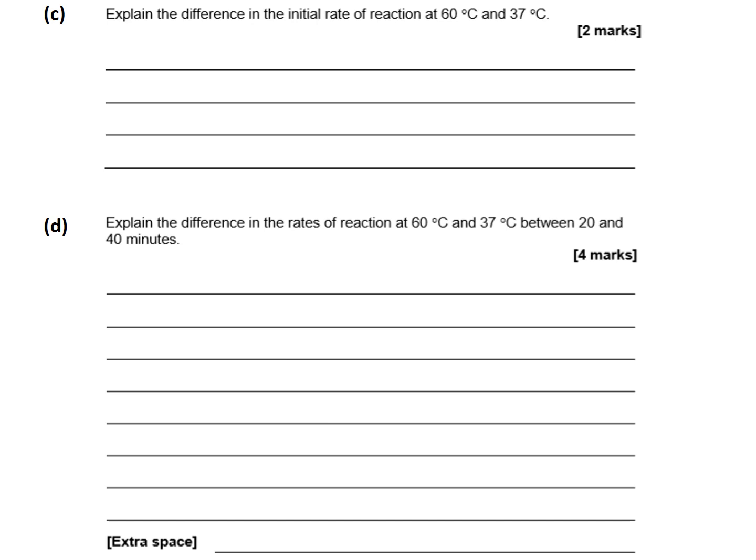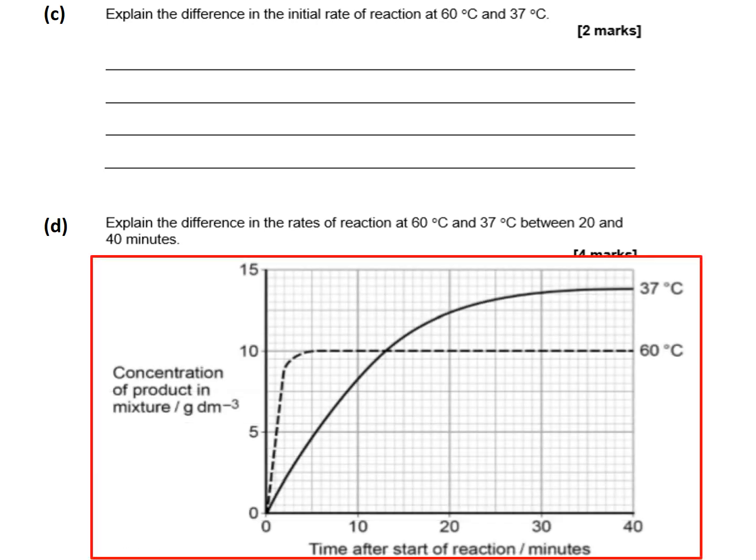The next question asks us to explain the difference in initial reaction rate at 60°C versus 37°C. When talking about temperature we're considering two things: the amount of kinetic energy the substrate and enzyme molecules have, affecting how quickly they move and successfully collide; and whether the enzyme is being denatured. At 60°C there is a much higher initial reaction rate because higher temperatures mean higher kinetic energy — the substrate and enzyme move more quickly, leading to more successful collisions and more enzyme-substrate complexes, so more product is produced more rapidly.